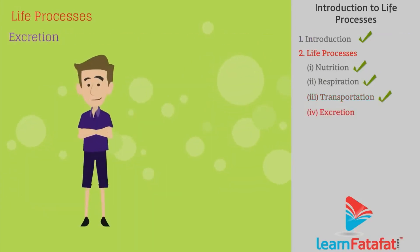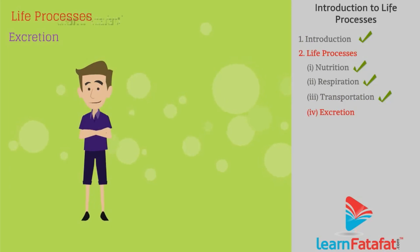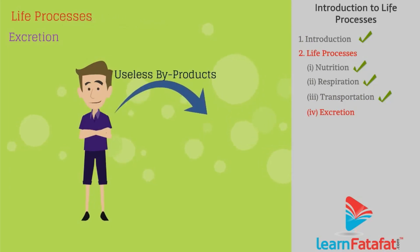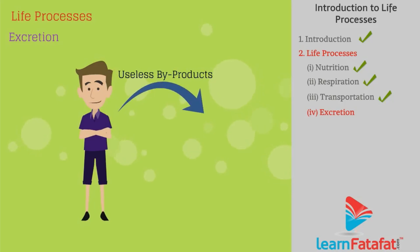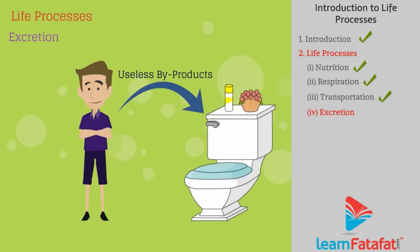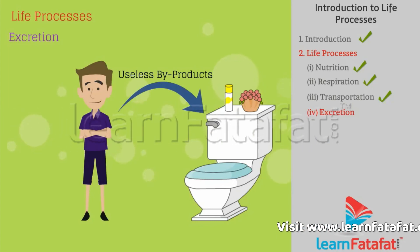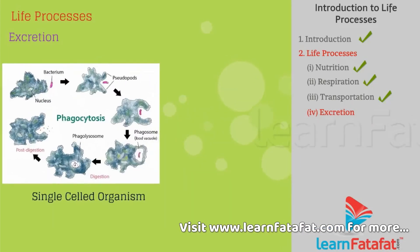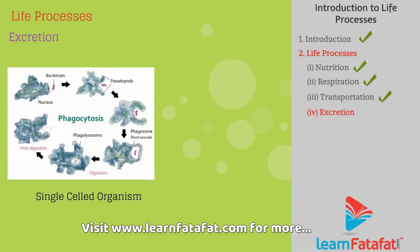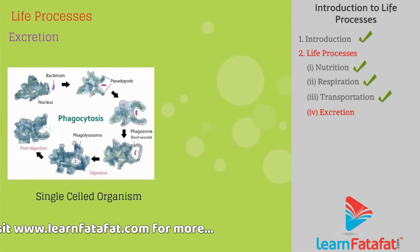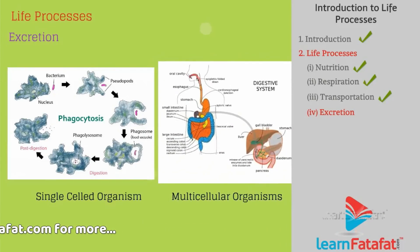Excretion: The chemical reactions within the body generate by-products which are useless and can harm the body, hence these need to be removed. This process is called excretion. In single-celled organisms, it is done by diffusion. However, multicellular organisms like humans have well-developed tissues to carry out the excretion process.